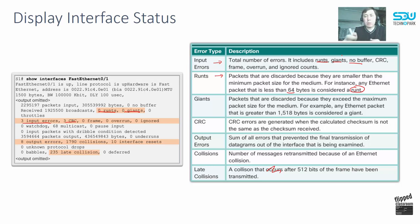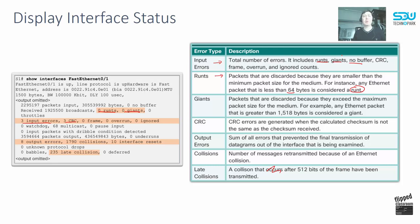'Giants' are packets discarded because they exceed the maximum packet size. For Ethernet, a packet greater than 1,500 bytes is considered a giant, because the MTU — Maximum Transmission Unit — for Ethernet is 1,500 bytes.